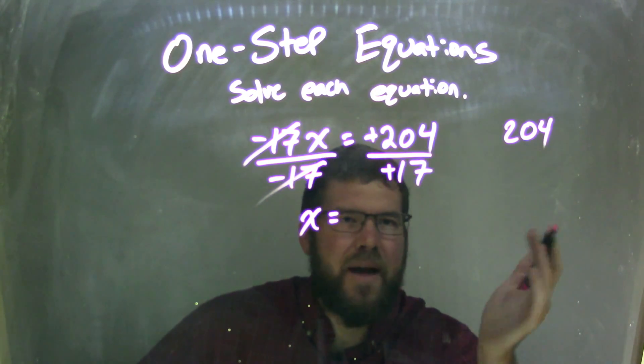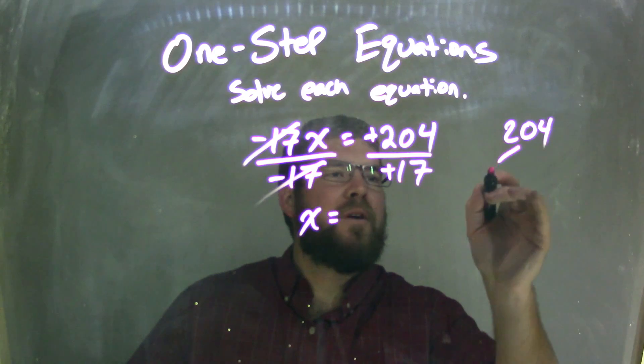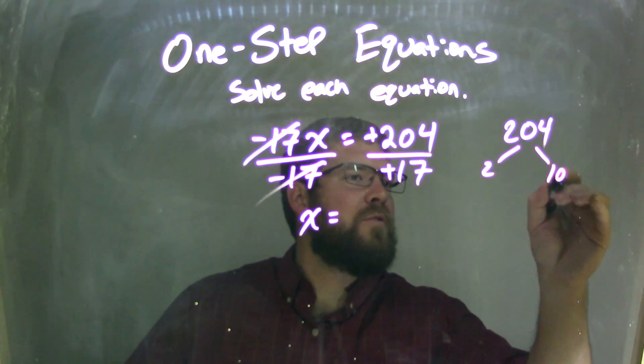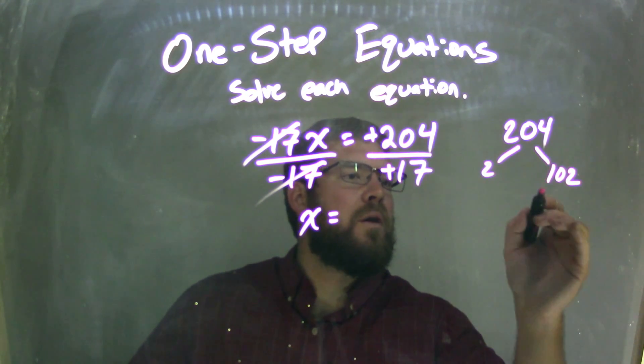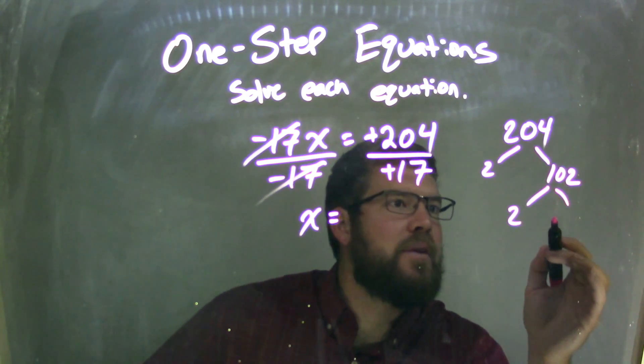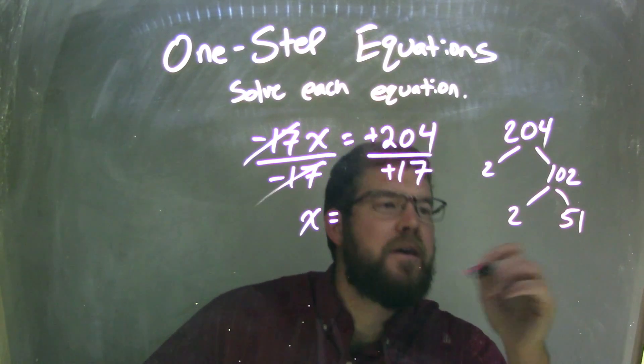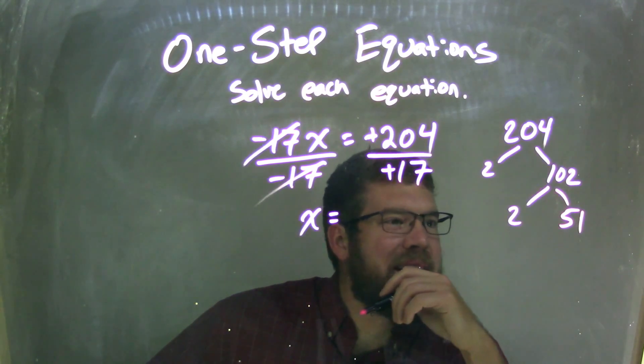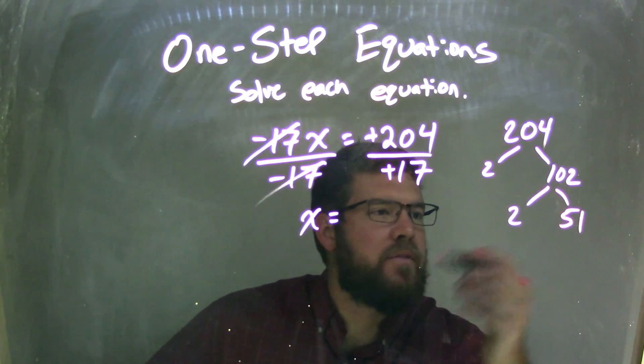Because 17 is prime, so I can't break that one down. Well, 204, simple as it's 2 and 102. 102 is 2 and, what is that, 51? 51, does anything go into 51? Does 3? 3 goes into 51, right?